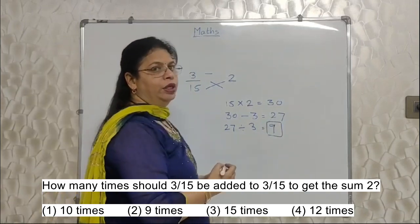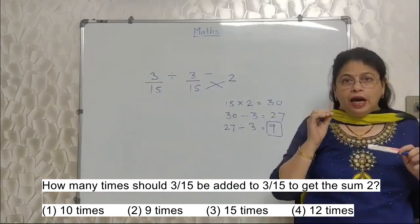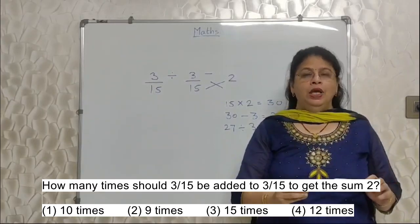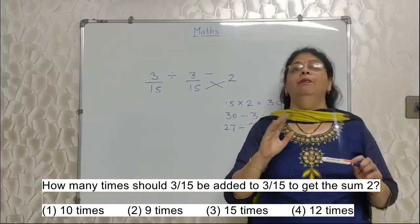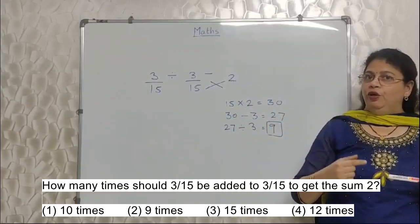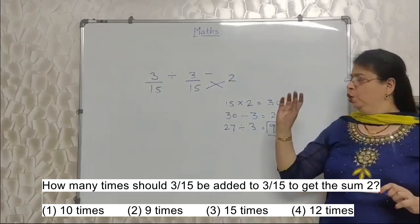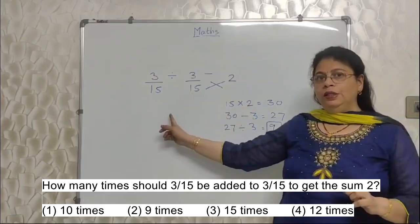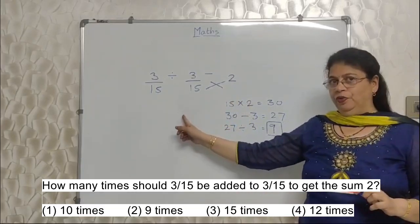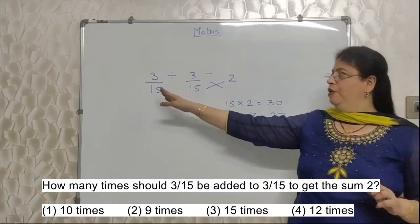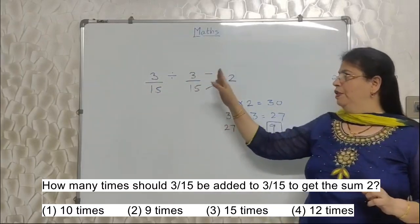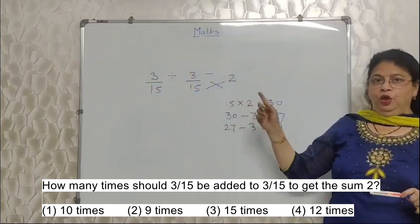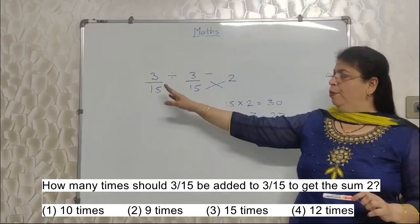When students know this shortcut, they arrive at the answer manually within few seconds. I suggest you should never do any sum manually, because the probability of making mistakes is much more in that case. Do a little calculation on paper. Students, many times they have asked this type of question. They will change this fraction, they will change this number, nothing else. Your method is same, you have to follow this method.